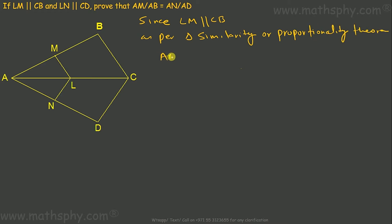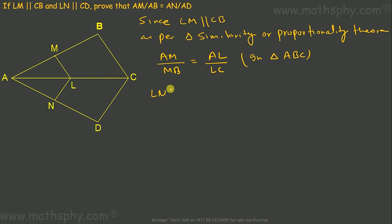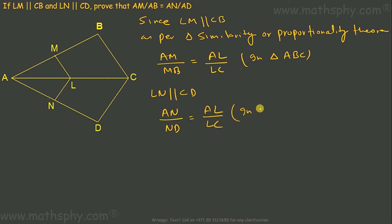By the proportionality theorem in triangle ABC: AM over MB equals AL over LC. Then, since LN is parallel to CD, by the same similarity theorem in triangle ADC: AN over ND equals AL over LC.